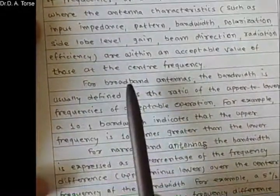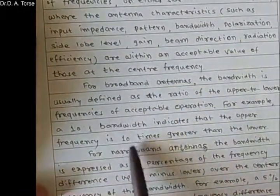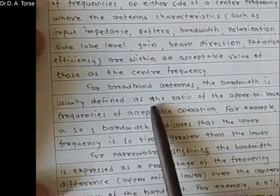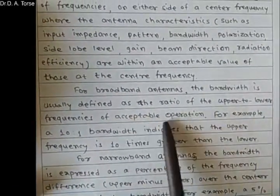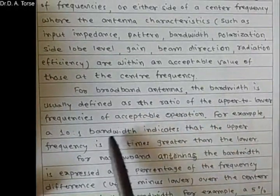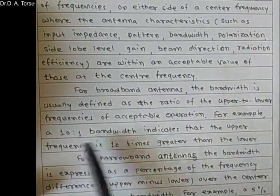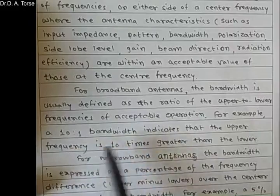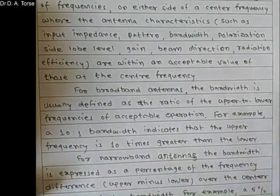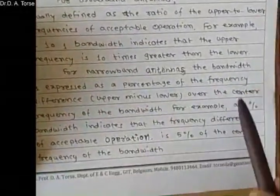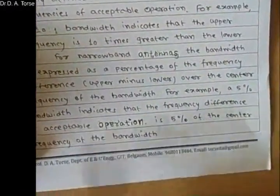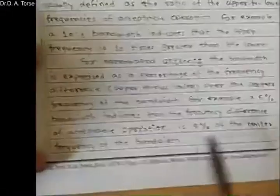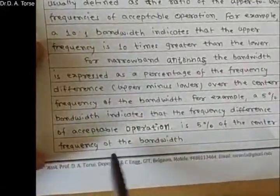Based on the bandwidth, antennas are categorized as broadband antennas and narrowband antennas. In broadband antennas, the bandwidth is usually defined as a ratio of upper to lower frequency of acceptable operation — for example, 10:1 means the upper frequency is 10 times greater than the lower frequency. For narrowband antennas, the bandwidth is defined in terms of percentage; for example, 5% bandwidth indicates the acceptable frequency difference is 5% from the central frequency.